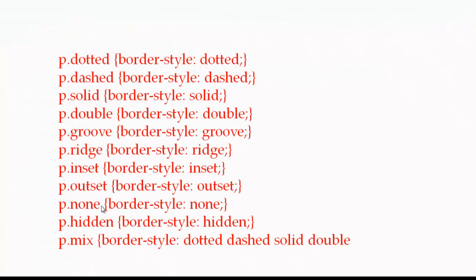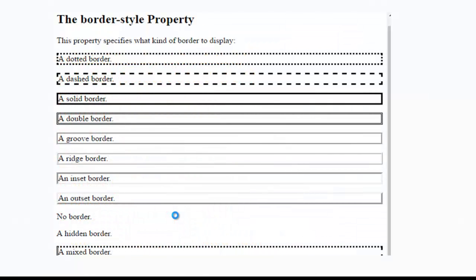These are the different border styles. We have a class with border-style: dotted, border-style: dashed, solid, double, groove, ridge. These are the different border styles available in CSS. This is how it displays — a dotted border and a dashed border, inset, outset, no border and a hidden border, and a mixed border.